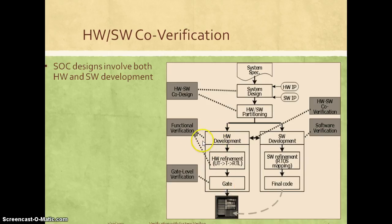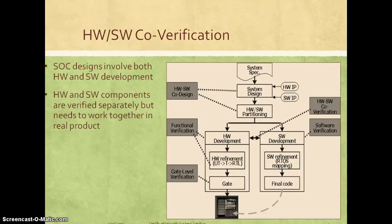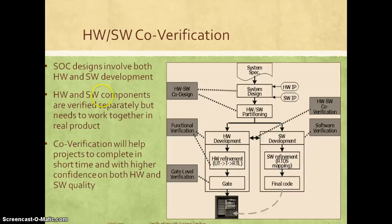In the hardware development phase we do functional verification as well as RTL verification to make sure the hardware is working standalone. Similarly, software development involves software verification to make sure the software works standalone. Traditionally, we never used to verify hardware plus software together before going to real silicon. However, with design complexity increasing in recent SOC designs, it is becoming more and more important to verify hardware and software together before getting the first silicon, because that can save a lot of surprises in terms of silicon bugs and avoiding re-spins. Hardware-software co-verification helps projects complete in shorter time with higher confidence.